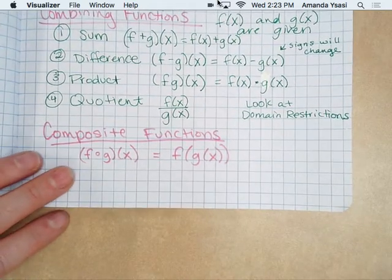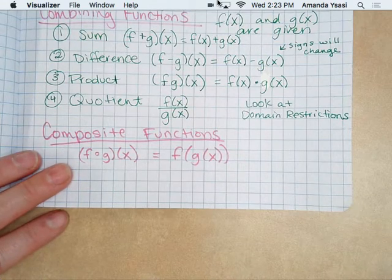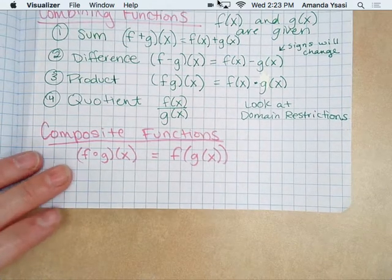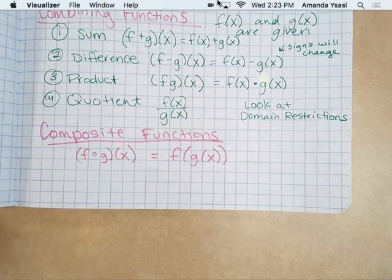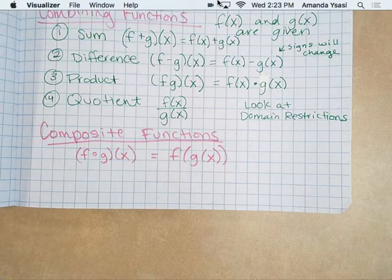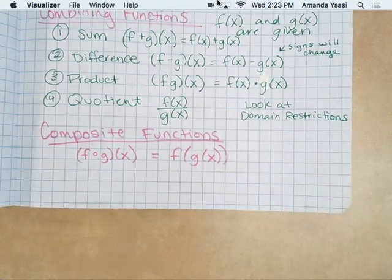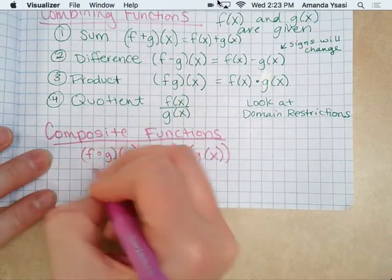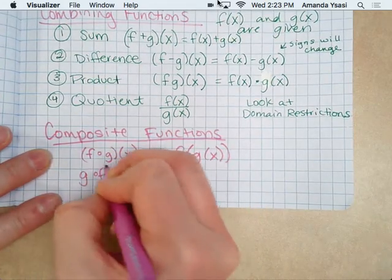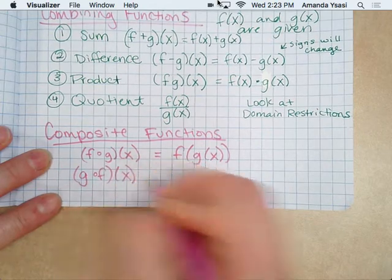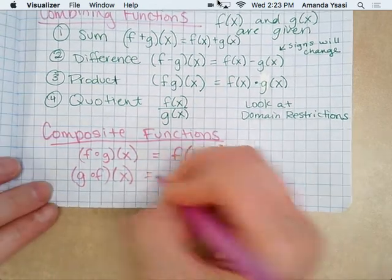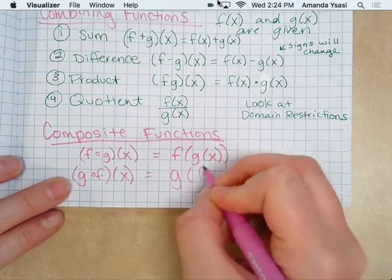When you do the composite, you're going to plug in G of X in for the values of X in that function F. Sounds really confusing — you'll have learned about this in algebra 2. And then we have another one: G of F of X. So it's going the opposite way — you have G of F of X.